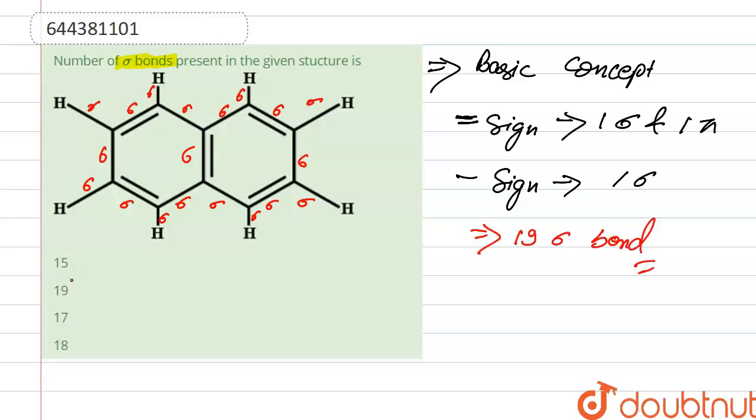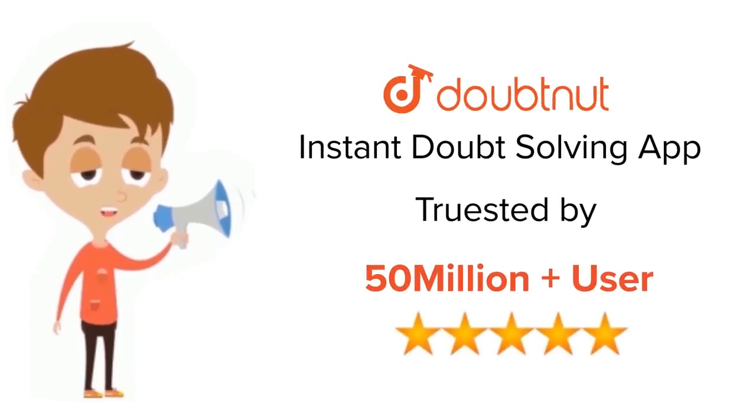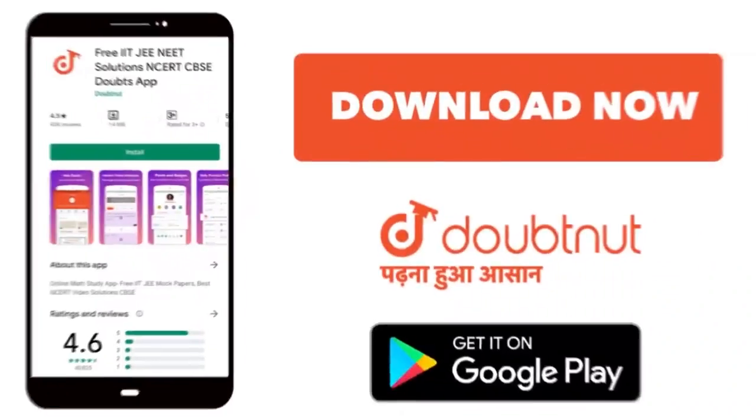Are present, right? So our correct option is option B. Thank you. For class 6 to 12, IIT-JEE and NEET level, trusted by more than 5 crore students, download Doubtnut app today.